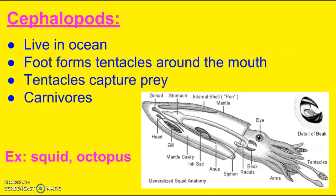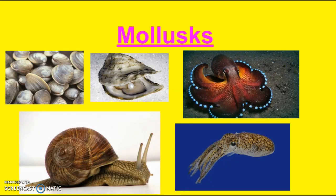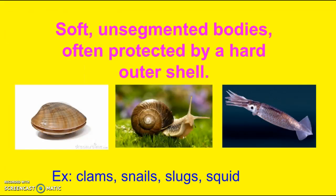Finally, we have our third group, the cephalopods. These live in the ocean, and their foot forms tentacles around their mouth. Your squid and octopus are examples. These tentacles are used to capture prey, and they're also carnivores. I hope that was helpful.